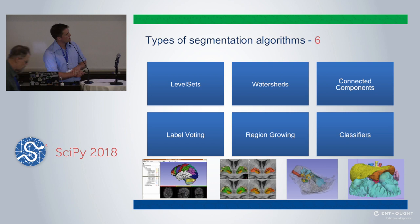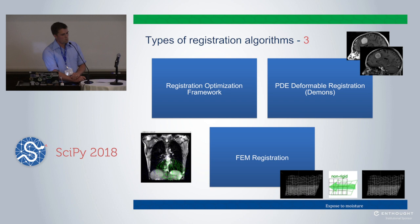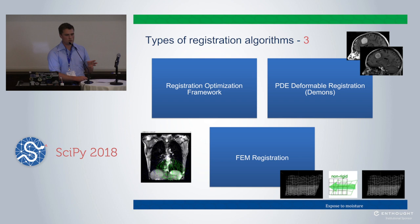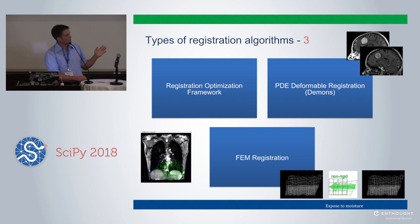There are different types of registration algorithms as well. What's mostly used is the registration optimization framework, where you have different options in different categories for doing registration — finding the spatial correspondence — and viewing that as an optimization problem where you can choose a numerical optimizer, choose your cost function which is an image similarity matching metric, and plug all these components together to get a registration algorithm that works with your type of data. There are also daemons — optical flow type PDE algorithms — and finite element method-based algorithms.